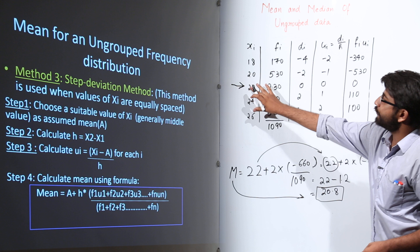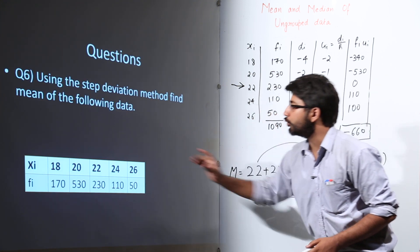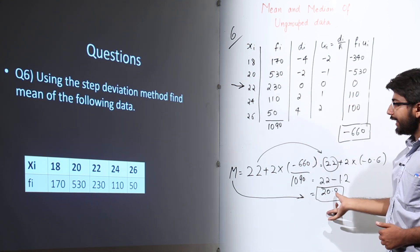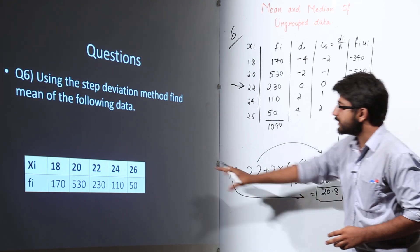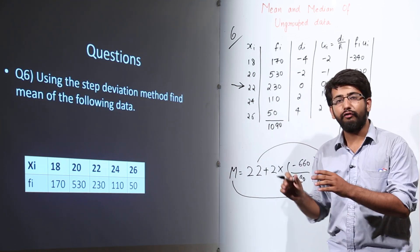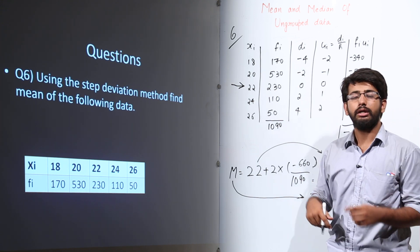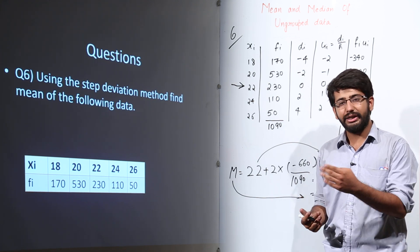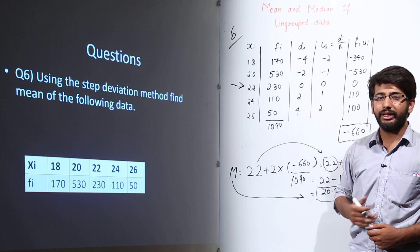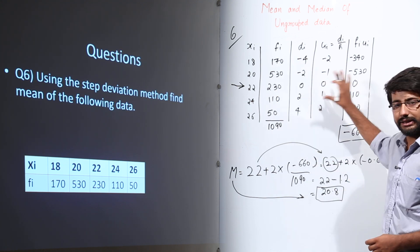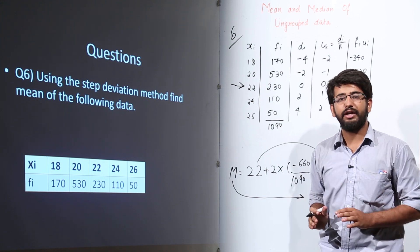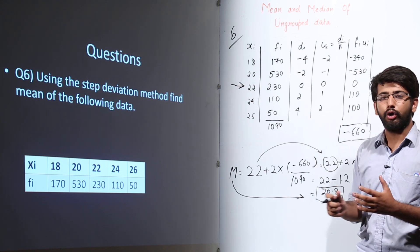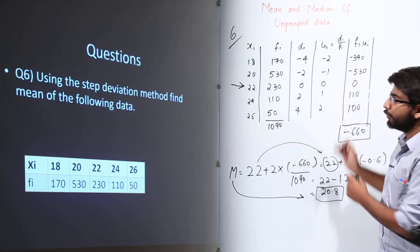So 20.8 is the mean of question number 6's frequency distribution. If you used the direct method it would take the longest time; the assumed mean method takes less time; but the Step Deviation Method takes the least time to find the mean of an ungrouped frequency distribution.